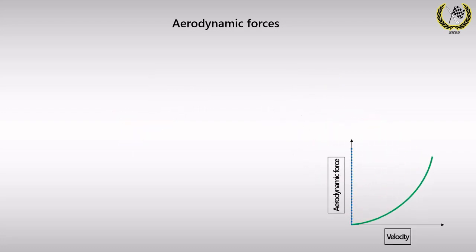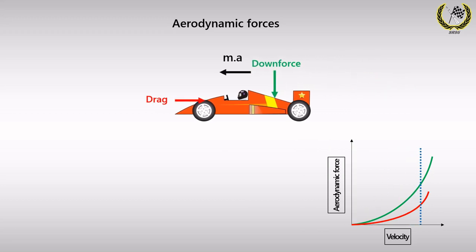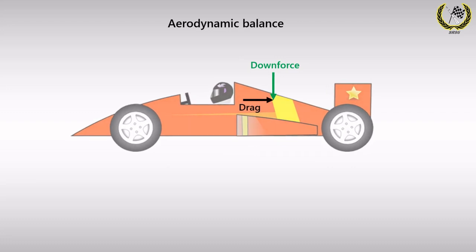Aerodynamic force is proportional to the square of velocity — when speed is doubled, the force quadruples. This holds true for both downforce and drag. At a certain velocity, the drag force becomes equal to all the force pushing the vehicle forward, meaning the engine cannot overcome drag. The velocity stagnates — this is called the terminal velocity. Unfortunately, drag and downforce go hand in hand, so it's not always advisable to have high downforce setups for tracks with long straights, though this assumption isn't always true.